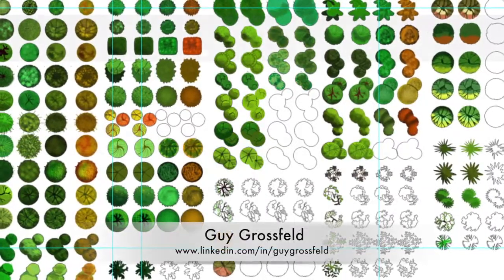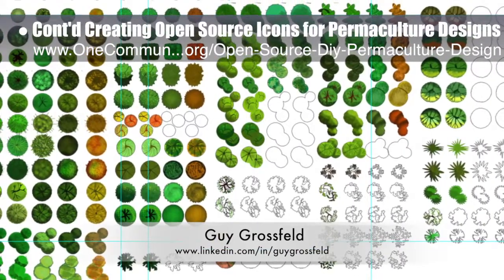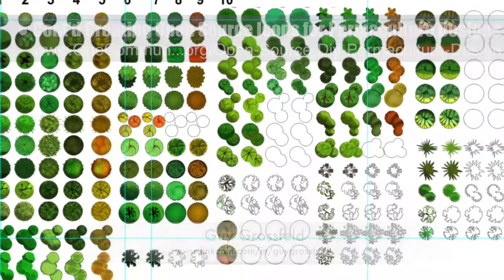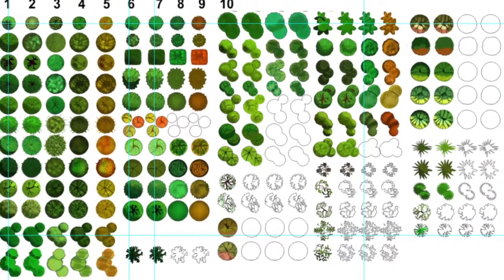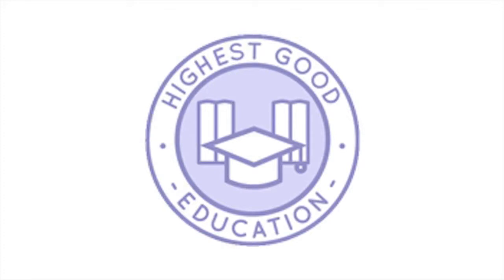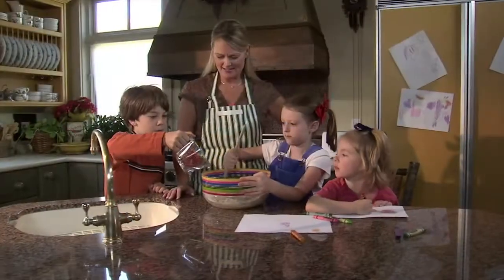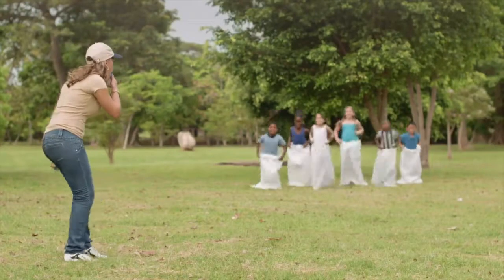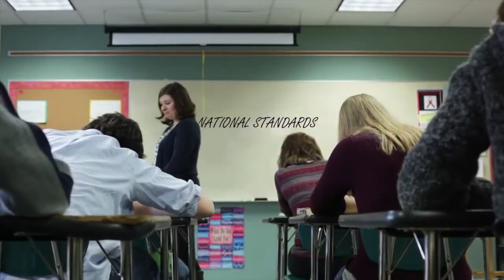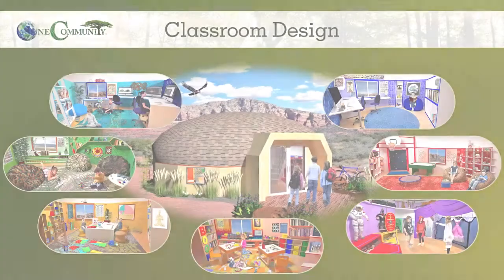Guy Grossfeld, graphic designer, completed his 7th week working on creating an open source icon simple set for our permaculture design. One Community's approach to highest good education is designed for all age groups, adaptable to any schooling environment, inspiring and fun for all participants, and includes national standards, all subjects, lesson plans, teaching strategies, learning strategies and tools, classroom design, and more.